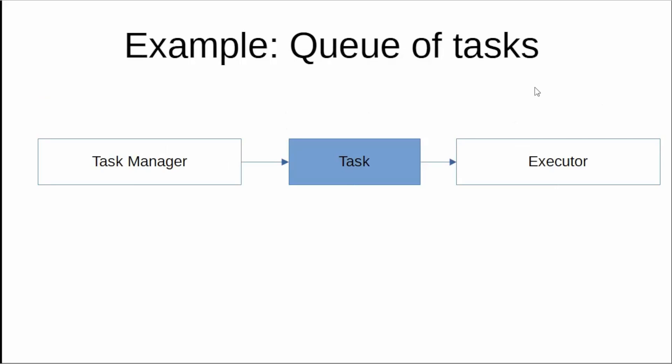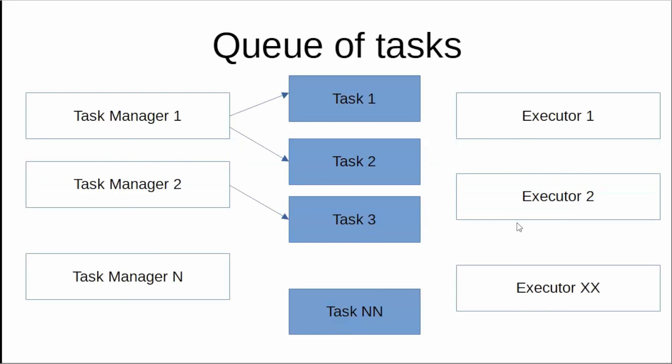So imagine we have a queue of tasks. By queue we mean some real queue — for example, a queue of visitors to attend a doctor in a hospital, or attend a manager in some organization or institution. The idea is that we have several task managers. A task manager is a common name for the module in your software which will generate a task. And we have a set of executors. Task managers will generate tasks and executors will pick up the first outstanding task, try to execute it, and return for the next task — just like it works in a real institution like a hospital.